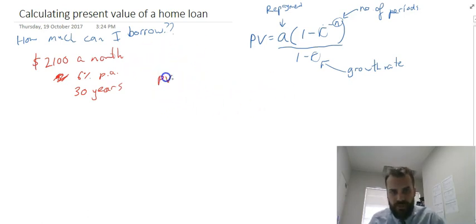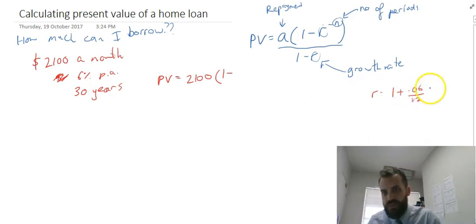So the present value of a loan that has those constraints is A, $2,100, that's the payment, times 1 minus R. Let's do a little calculation for R here. R is equal to 1 plus the interest rate, 0.06, divided by 12, because this is compounding monthly.